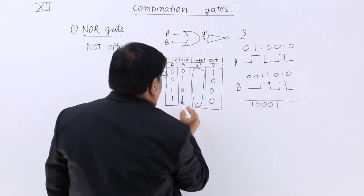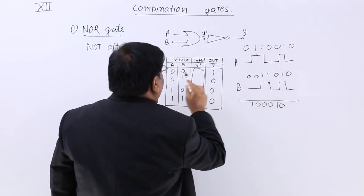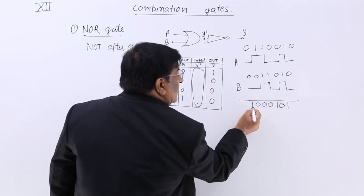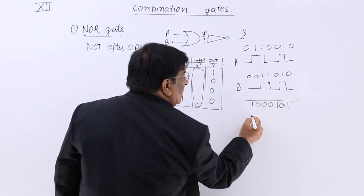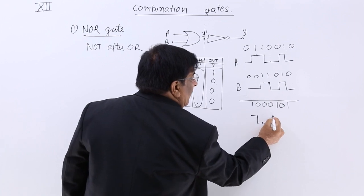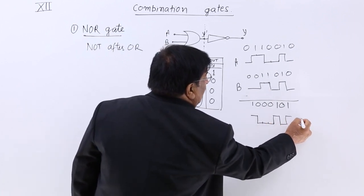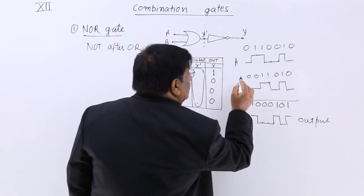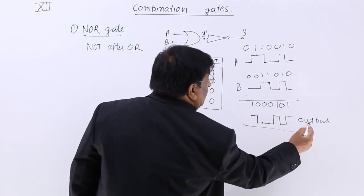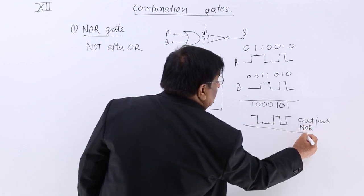At the sixth place, inputs 1 and 1 give 0. Now the output wave for the NOR gate starts: level 1, level 0, level 0, level 0, level 0, level 1, level 0, and level 1. These two waves are the inputs and this is the output — the output of the NOR gate.